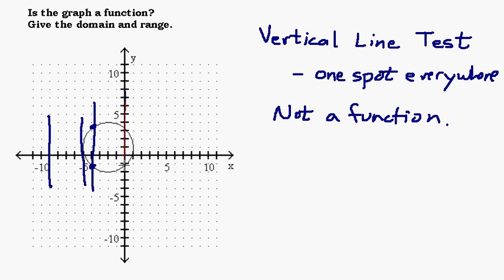So let's say we drew a vertical line right there through zero, and we can see that it's touching here and here. The coordinate of the upper point is (0, 3.1) and this point down here is below negative one, so we'll say (0, −1.2).